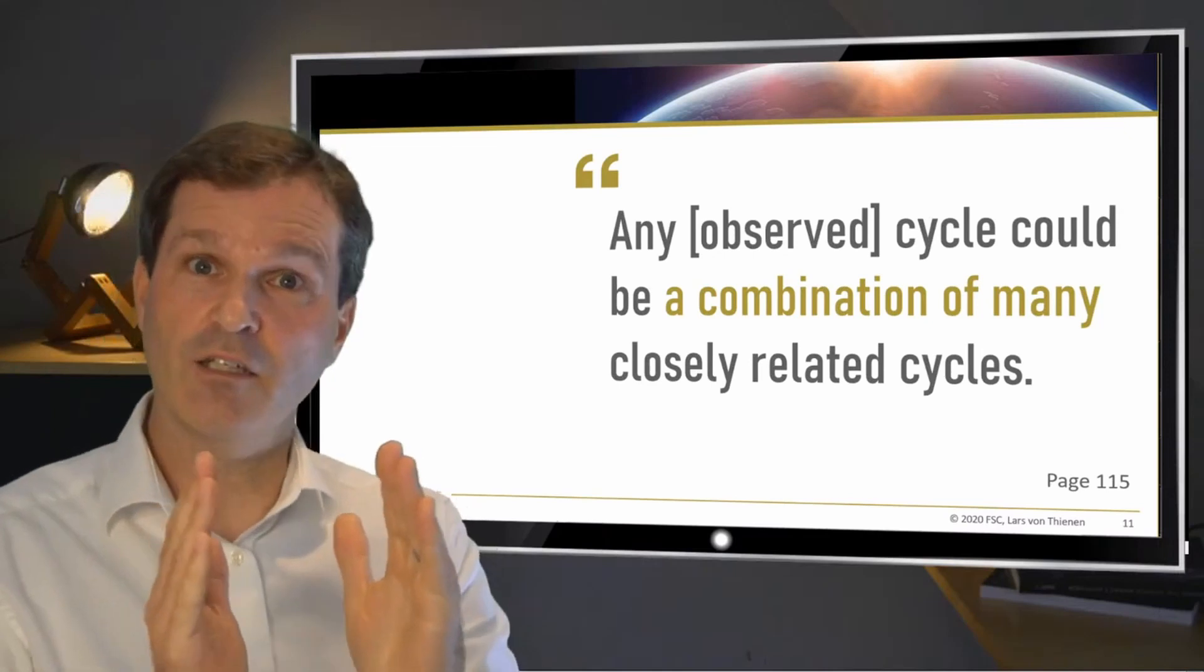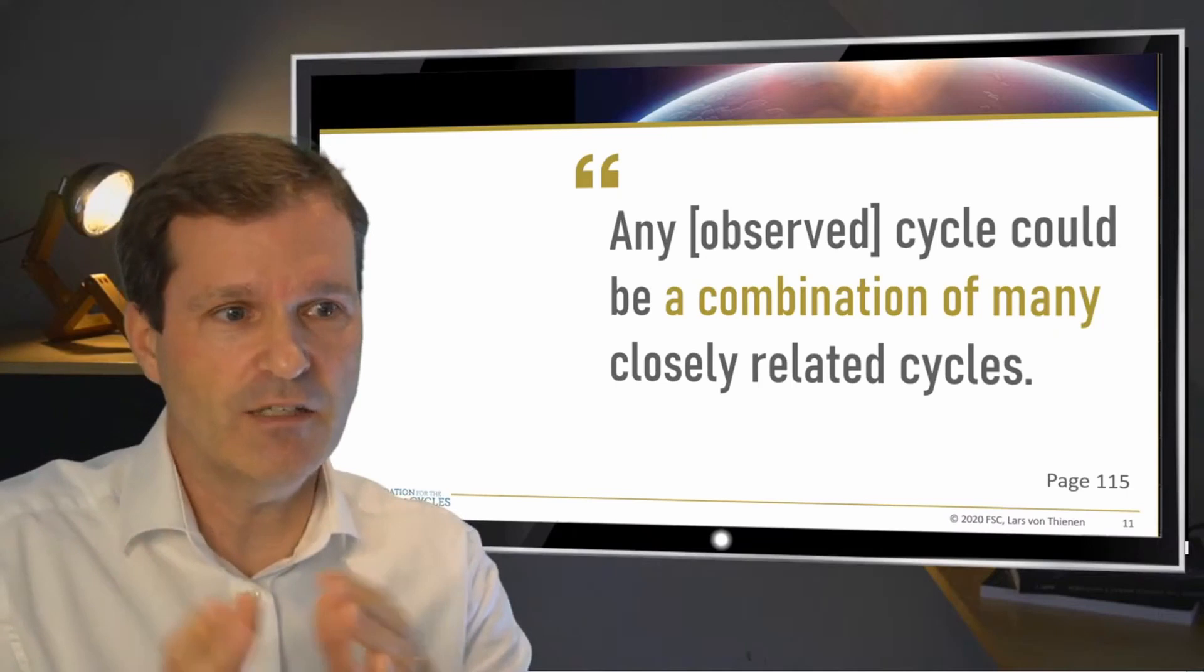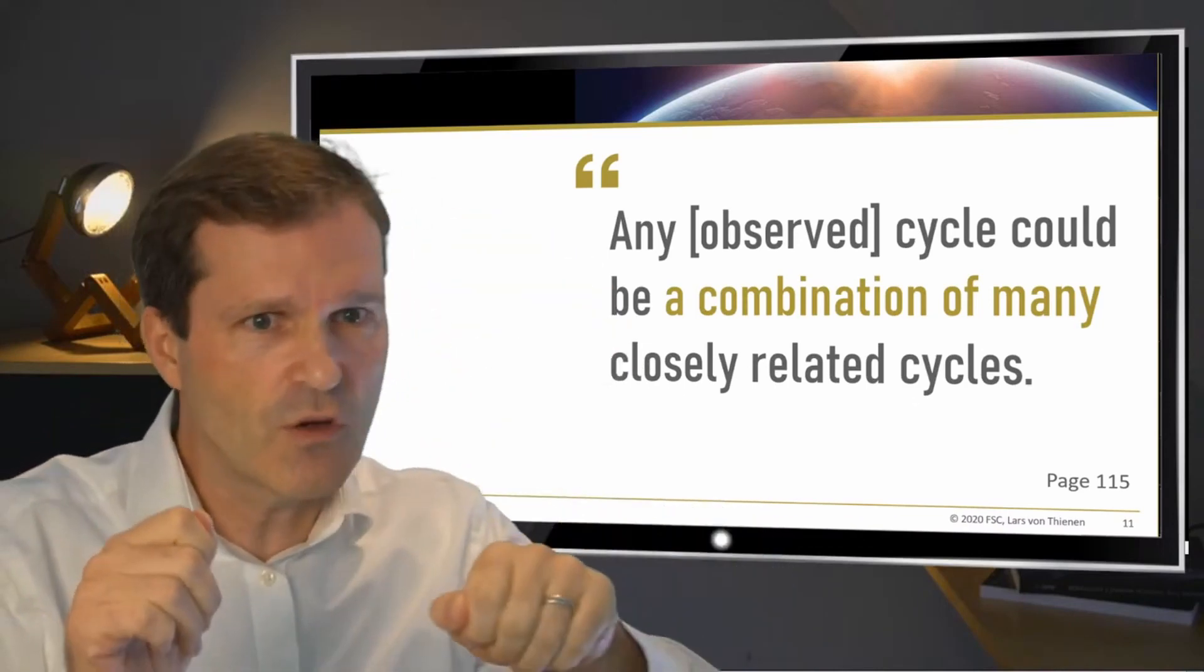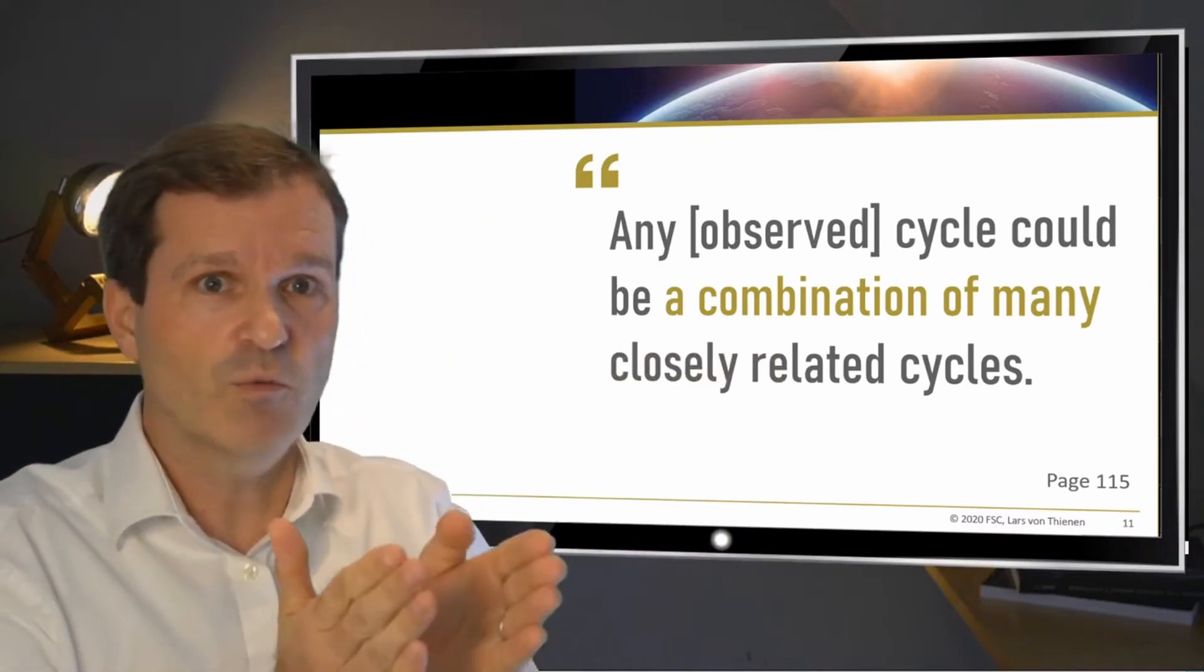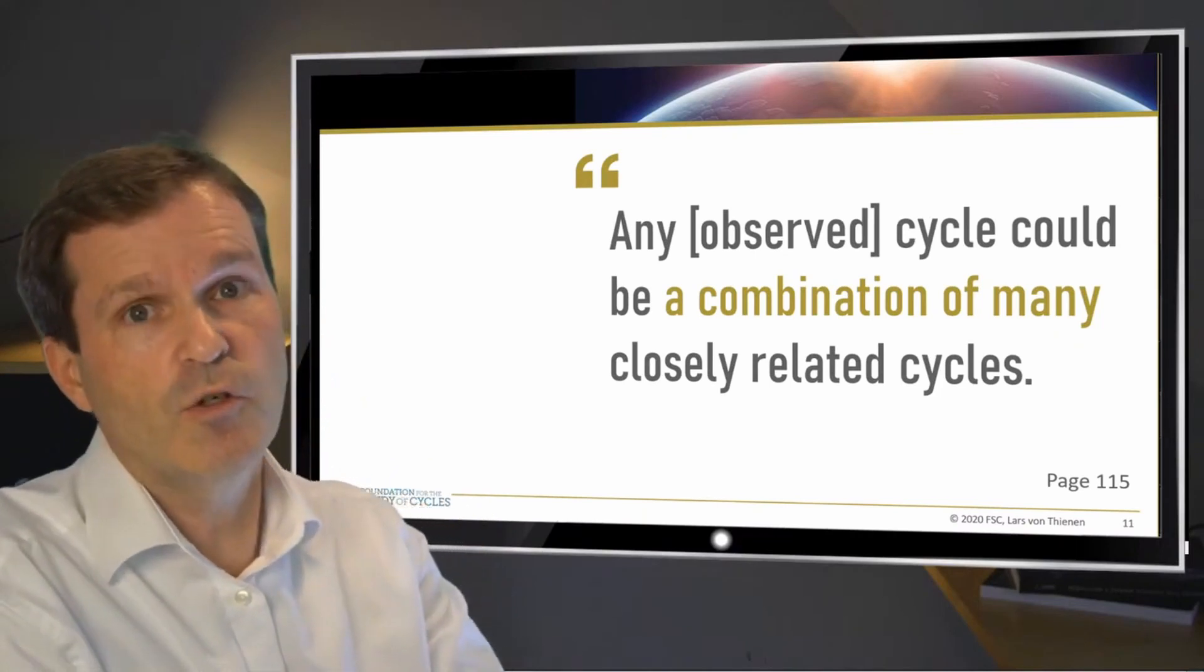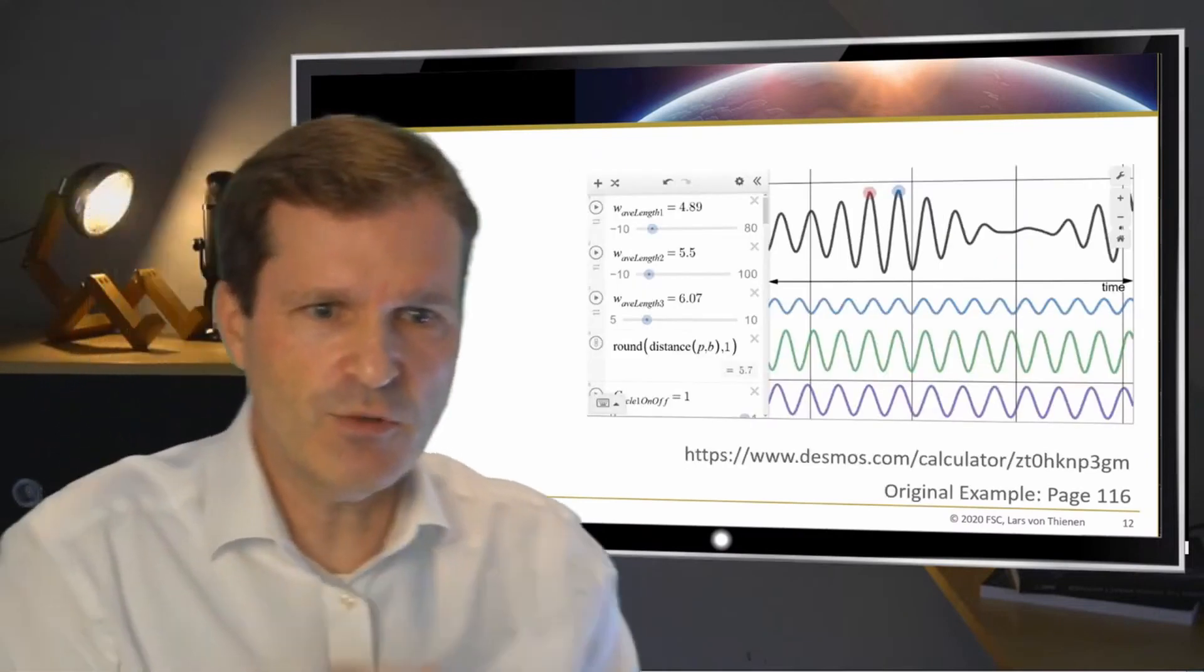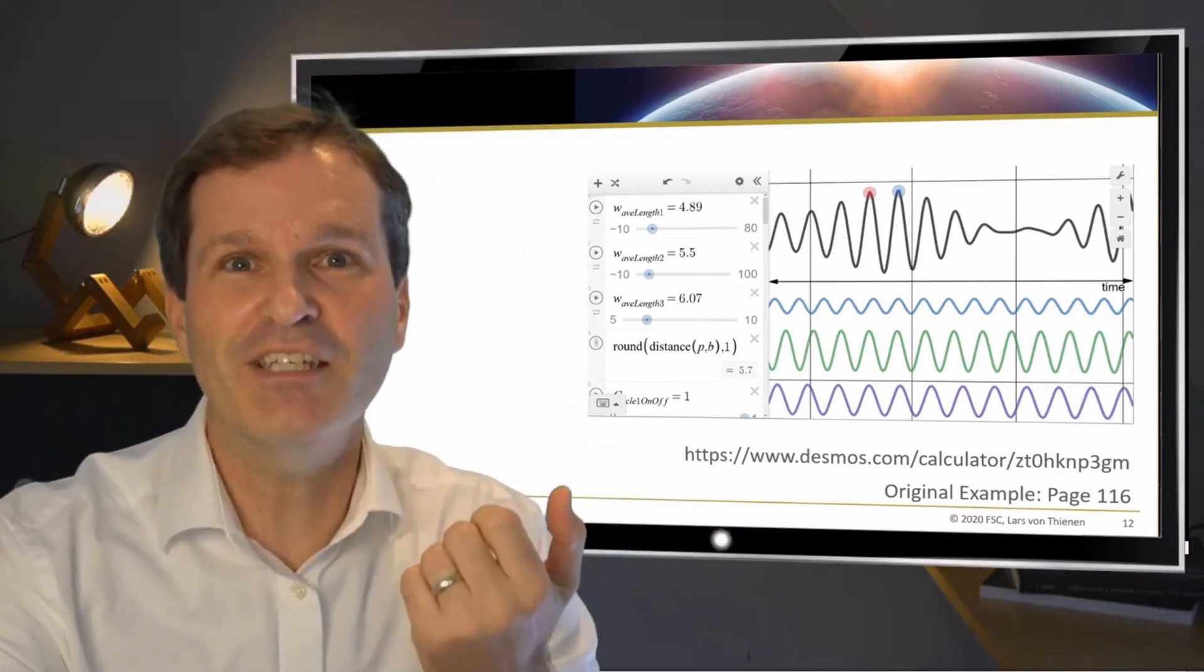Any observed cycle could be a combination of many closely related cycles. It looks like this is one cycle, but any cycle you might find on a chart could be a combination of many closely related cycles. What does this mean? Now I've prepared something here to get a better understanding of this. Let's bring this now into today's analysis world.